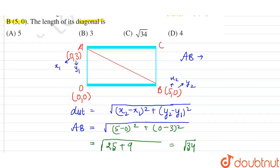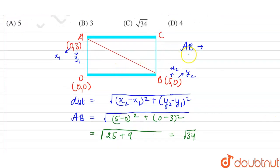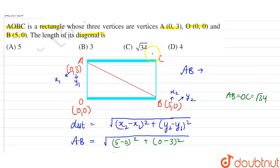Now we know that both the diagonals of rectangle are equal. So OC will be equal to AB, which is equal to under root 34. The diagonal is equal to under root 34. So we can say that the correct option here is option C.